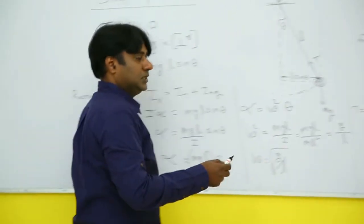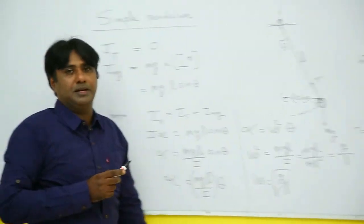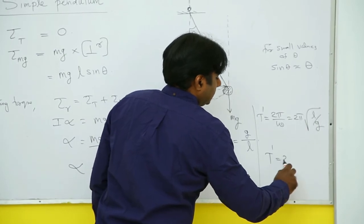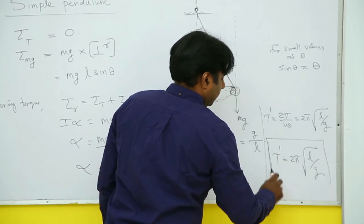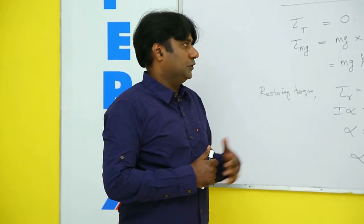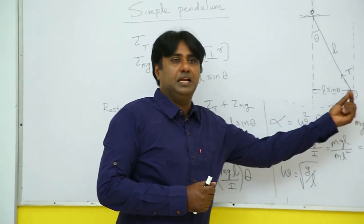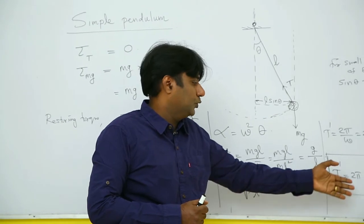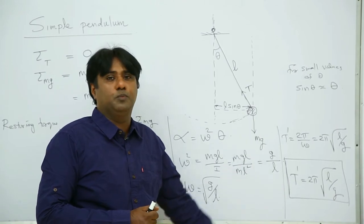Since I have already used T for tension, I will be using time period as T dash. So I am getting T dash which is the time period of oscillation as 2 pi into root of L by G. This is a famous equation which you have derived using the restoring torque experienced by the object. So I repeat, when you have a body which is a simple pendulum displaced slightly and left, it will undergo simple harmonic motion whose frequency or the time period turns out to be equal to 2 pi into root of L by G. So time period, sorry frequency will be 1 by 2 pi root of G by L.